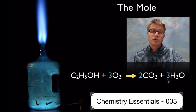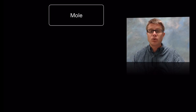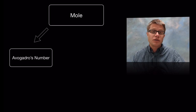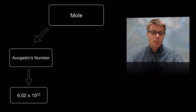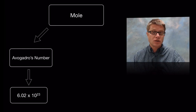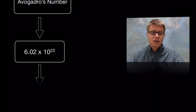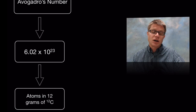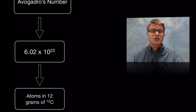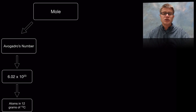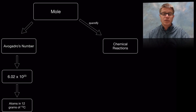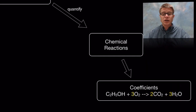It's really important when we deal with chemistry to understand what the mole is. The mole is simply Avogadro's number — it's a number, 6.02 times 10 to the 23rd. Where does that number come from? It's derived from the number of atoms in 12 grams of carbon-12, but it gives us a usable amount of material that we can work with in the lab.